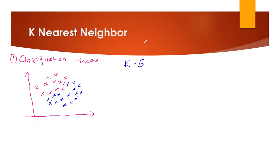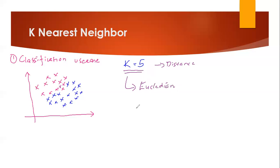Suppose K is equal to 5, and after the model is trained, we get a new data point somewhere on our plot. For that new data point, I'll check what my K value is — that is, how many nearest neighbors I need to consider in terms of distance. There are two parameters for calculating distance: Euclidean distance and Manhattan distance. I'll try to find the five nearest neighbors from this new point.